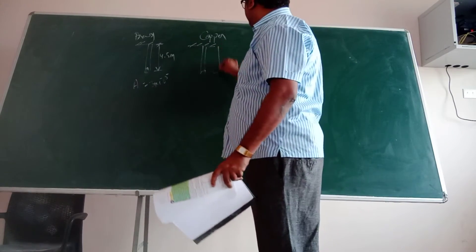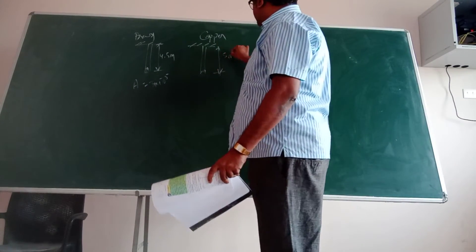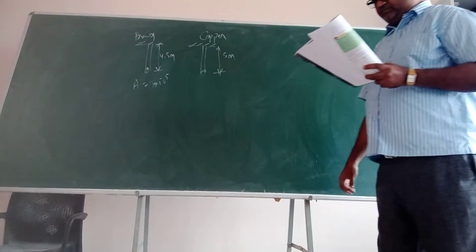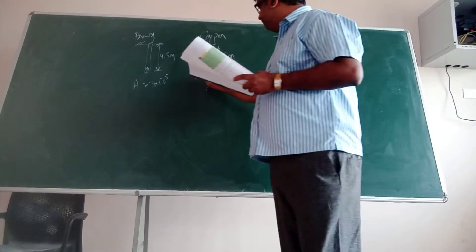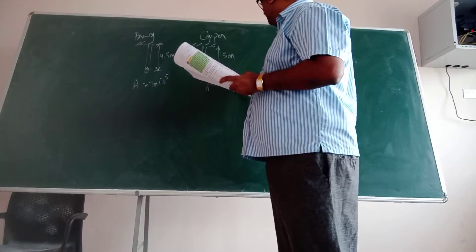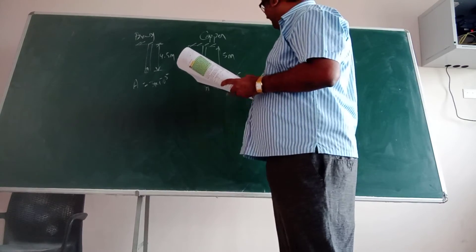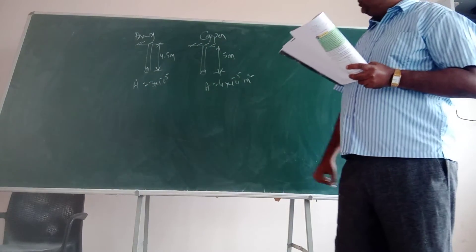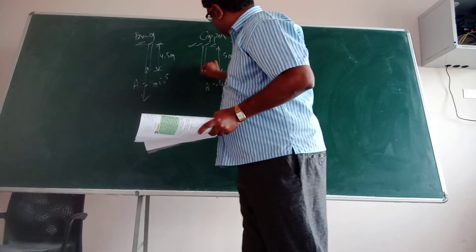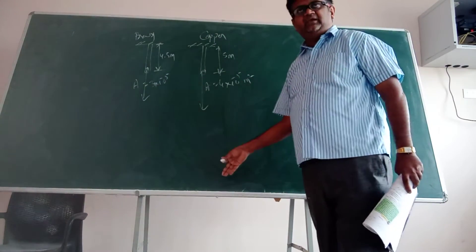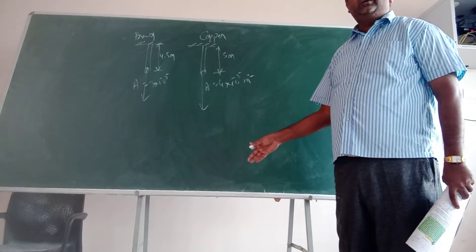Okay. And a copper wire of length 5 meters. Okay. Cross sectional area 4 into 10 to the power of minus 5 meters are stretched by the same load. The stretching will happen like this only, am I right? Correct.